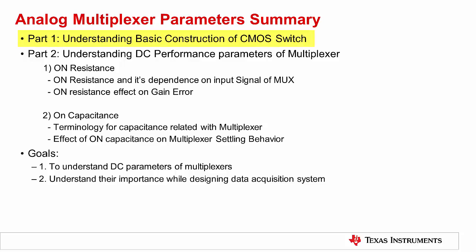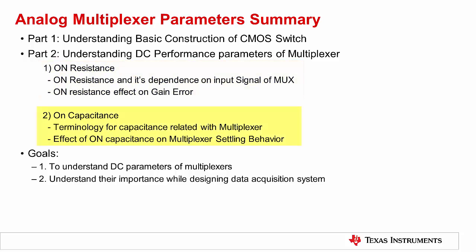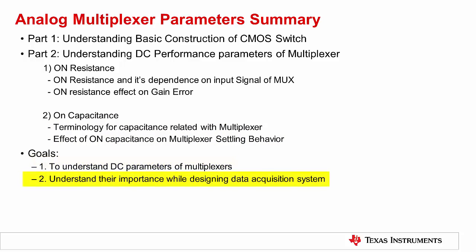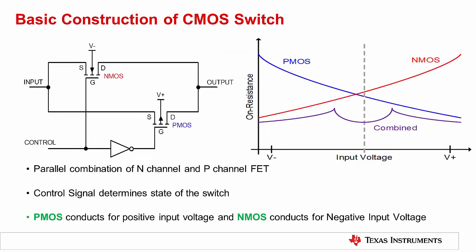In this video, we will first have a short discussion on the basic construction of a CMOS switch. Next, we will discuss on resistance and on capacitance. Specifically, we will see how on resistance can cause gain error and non-linearity, as well as how on capacitance can affect settling behavior of multiplexers. The main goal of this presentation is to highlight the DC parameters of multiplexers and to understand how they impact performance of a data acquisition system. Before moving to multiplexer basics, let's first understand the basic construction of a CMOS switch and its characteristics.